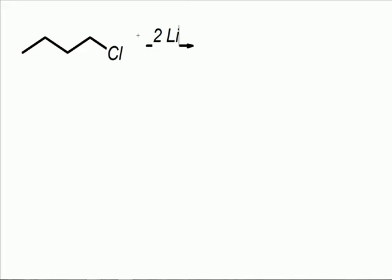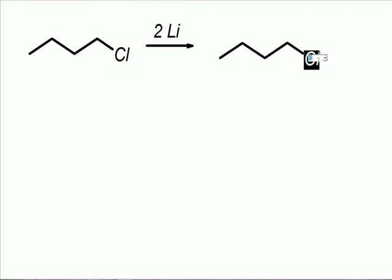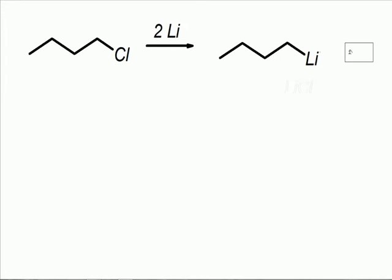The first thing is, how do you form these things? The easiest way is by subjecting an alkyl halide to two lithium metal atoms. What this does is it exchanges the halogen, makes the organolithium, and then produces a byproduct of lithium chloride, in this case.